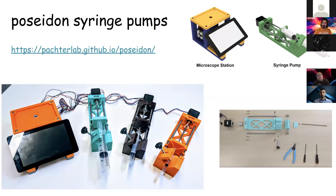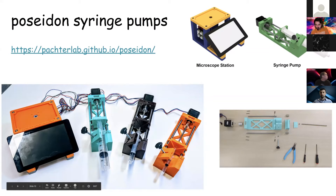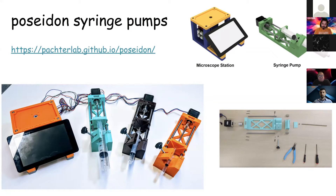It was a longer project, but now you too can go online, download the models, and order a few extra pieces on Amazon — a few screws, a motor — and assemble for about $30 each. That's a piece of equipment that usually costs at least a few hundred dollars, and it's more flexible than what you'd normally get.